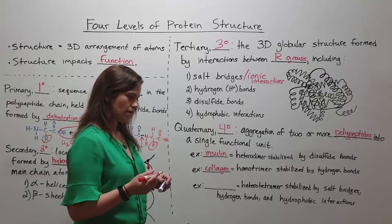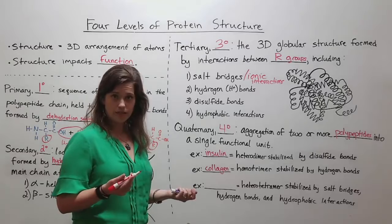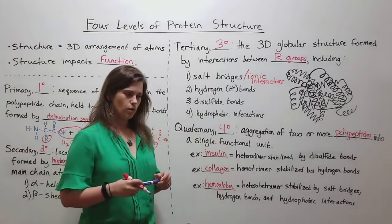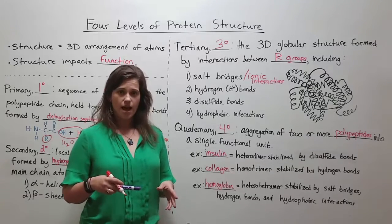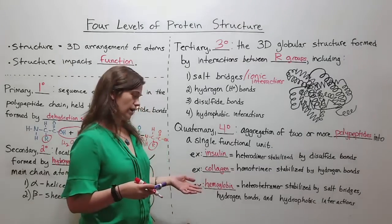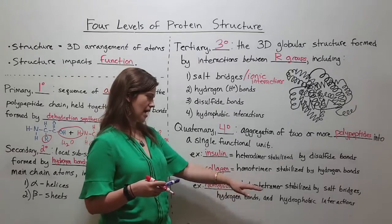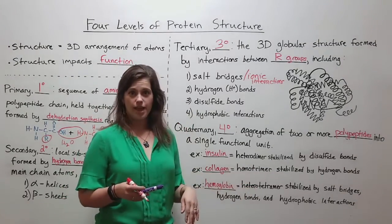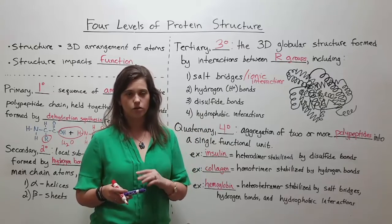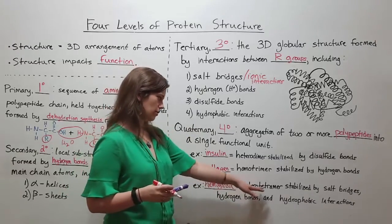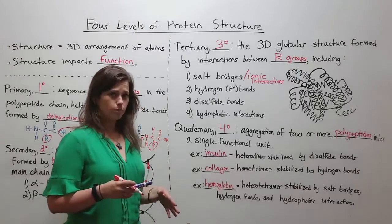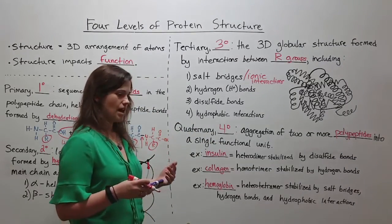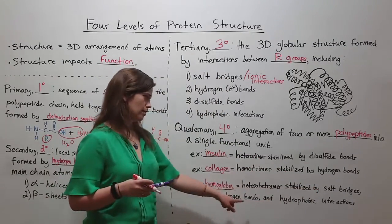Our final example is another commonly recognized protein: hemoglobin. Hemoglobin is at high concentrations in our red blood cells and carries oxygen from our lungs to our tissues — quite important for cellular function. Hemoglobin is a heterotetramer: tetramer because it's four polypeptide chains, hetero because they're not all the same. It's actually two alpha chains and two beta chains that come together to form this heterotetramer. It is capable of bonding up to four oxygens and transporting those to tissues, and is stabilized by salt bridges, hydrogen bonds, and hydrophobic interactions.